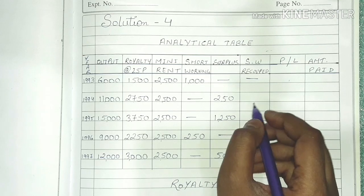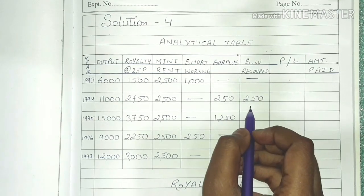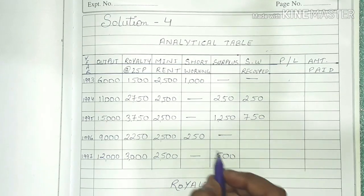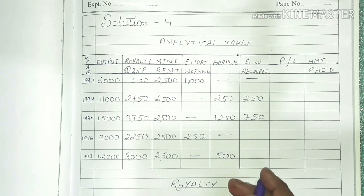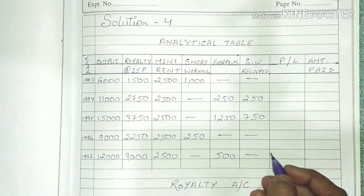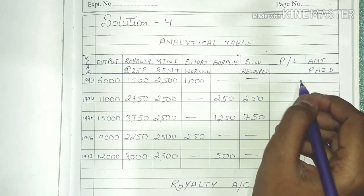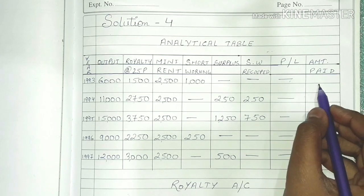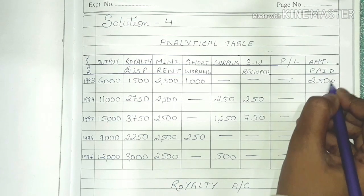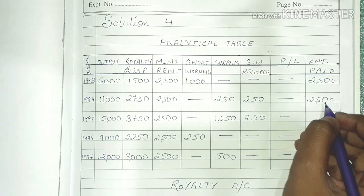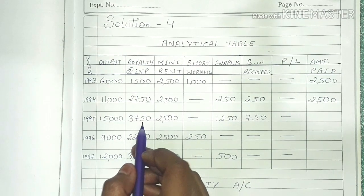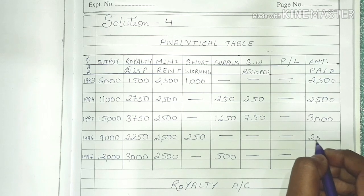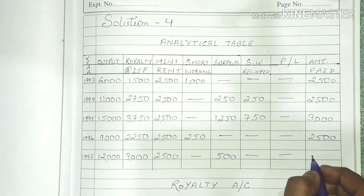So we have to recoup 1,000. In the second year it has a surplus of $250, so $250 will be recouped and we recoup $750 total. In the third year we recoup the remaining $250. Profit and loss will not go in the recoupment column. For amount paid: first year $2,500, second year $2,500. In the third year, royalty is $3,750 of which $750 is recouped and $3,000 paid to landlord. In fourth year $2,500 paid. In fifth year $3,000 paid because in year 5 we have not recouped.